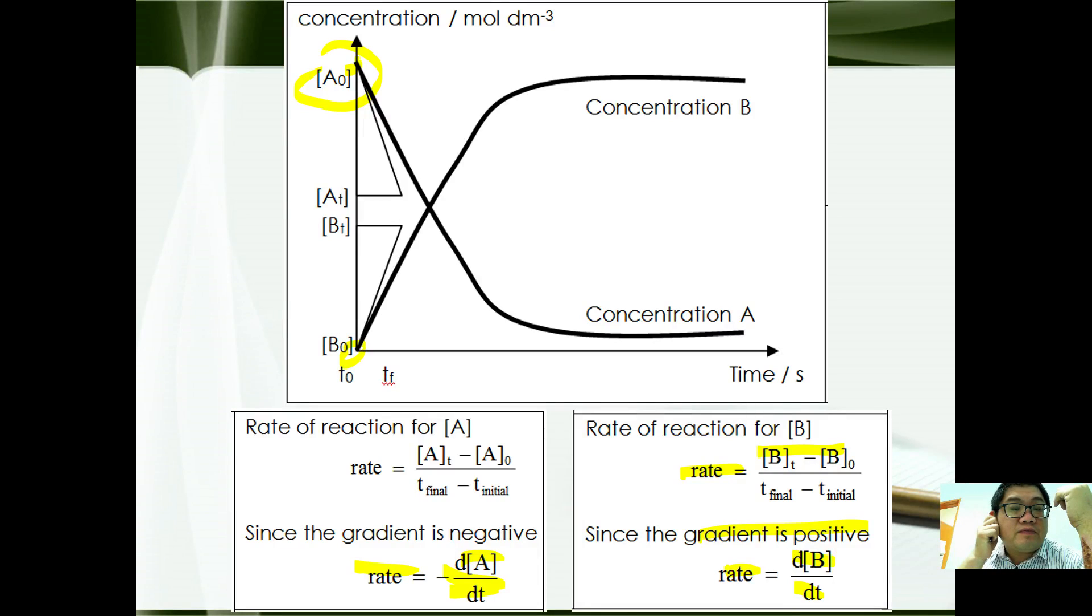Note that while the rate of the concentrations for reactants is negative, this is due to concentrations of reactants decreasing with time. While the gradient for product is positive because the concentration of product increases with time.